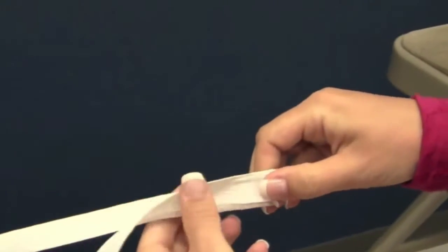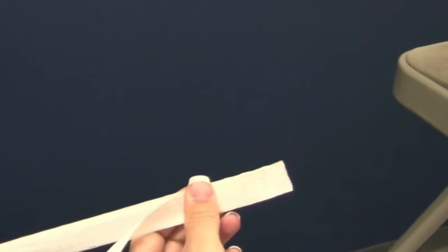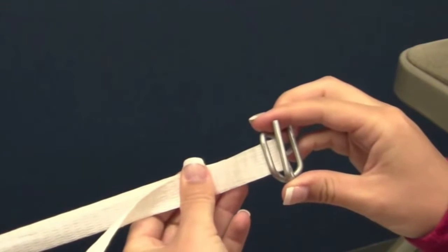First make a loop with your strapping. Holding the buckle, loop the strapping through the middle of the buckle and around the prong.